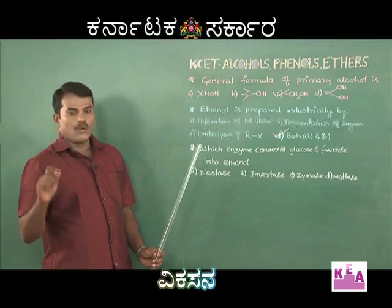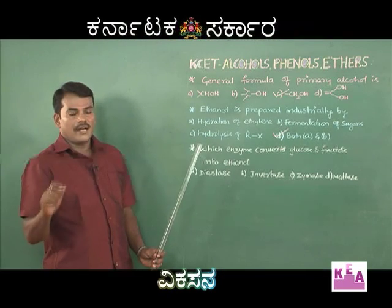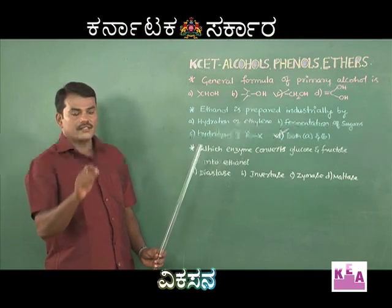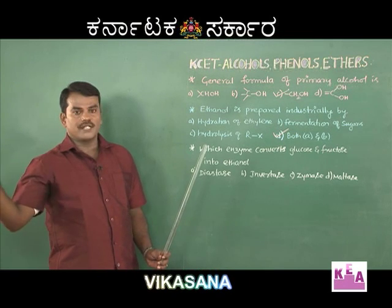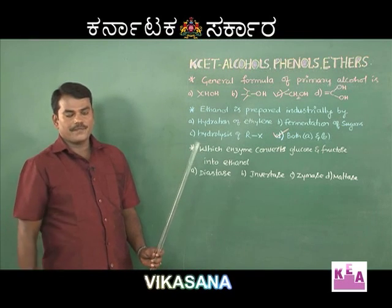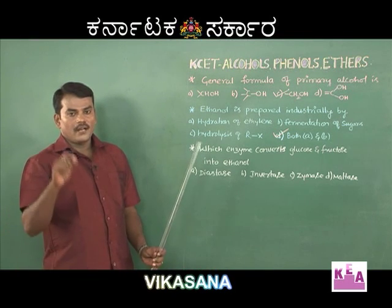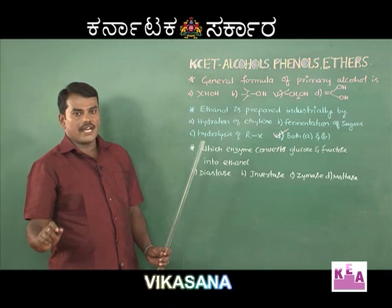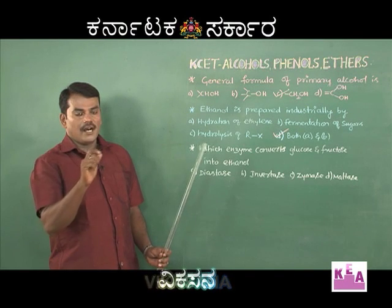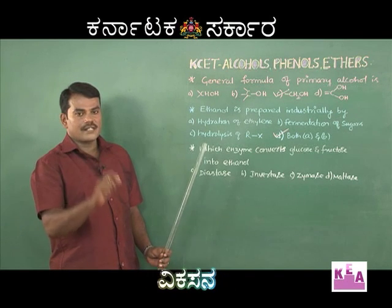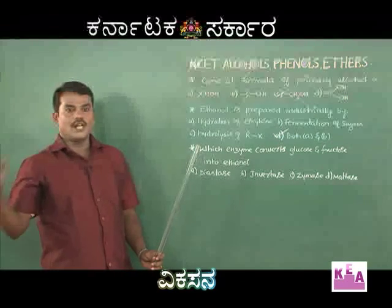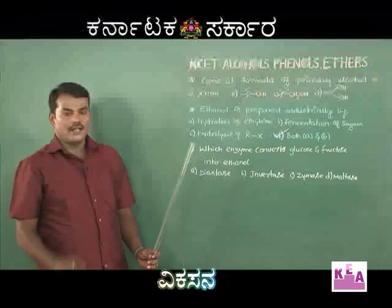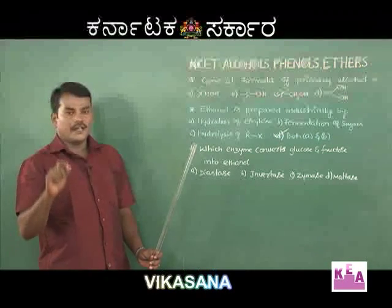In the manufacture of alcohol from molasses, two enzymes are used: invertase and zymase. The enzyme invertase hydrolyzes sucrose into glucose and fructose, whereas the enzyme zymase converts glucose and fructose into alcohol.